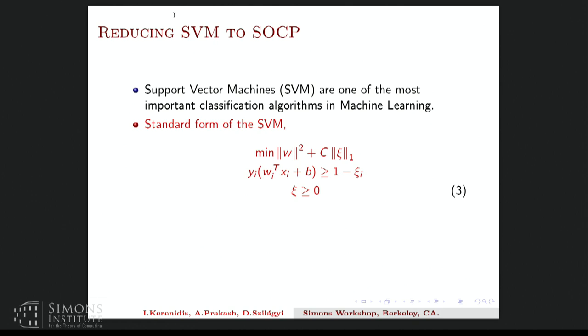And we have constraints that each vector in the training set is being classified properly. So in other words, W transpose X is a good classifier for the training set. So the constraints of Y_i, W transpose X_i plus B, are bigger than 1 minus ζ_i. So we are imposing the constraint that all these points are being separated by a wide margin hyperplane. So the ζ_i are penalizing how much you violate the constraints. So you have an L1 regularization in terms of the ζ_i, and this is the formulation of SVMs, which is the standard formulation used in machine learning applications.